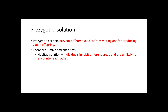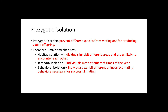Habitat isolation is when individuals inhabit different areas and are unlikely to encounter each other. Temporal isolation is when individuals mate at different times of the year. Behavioral isolation is when individuals exhibit different or incorrect mating behaviors necessary for successful mating.